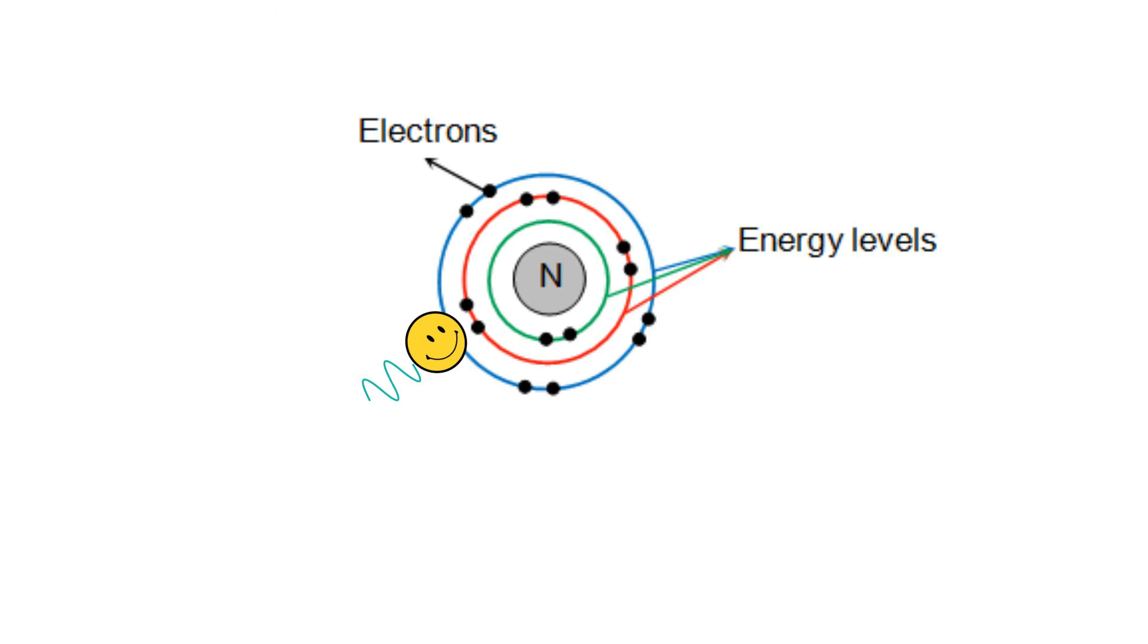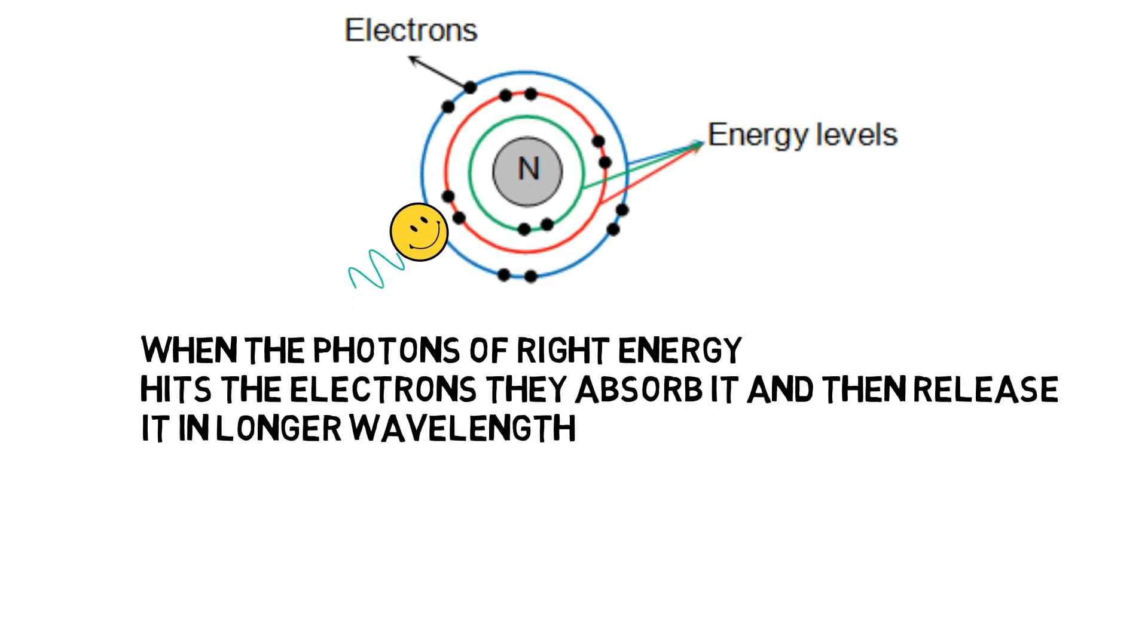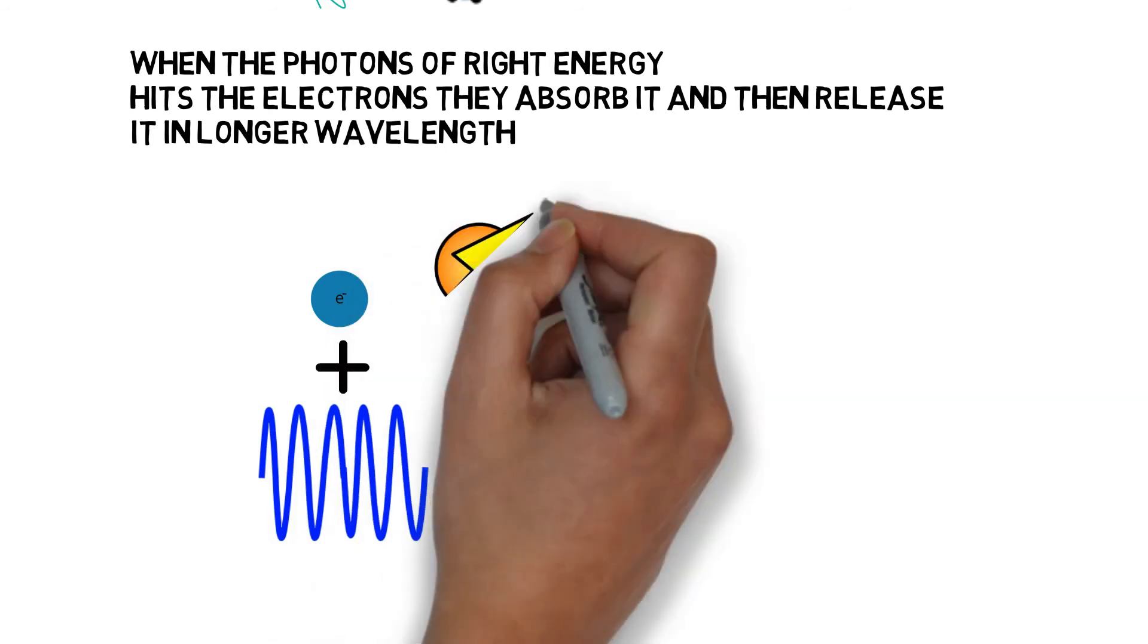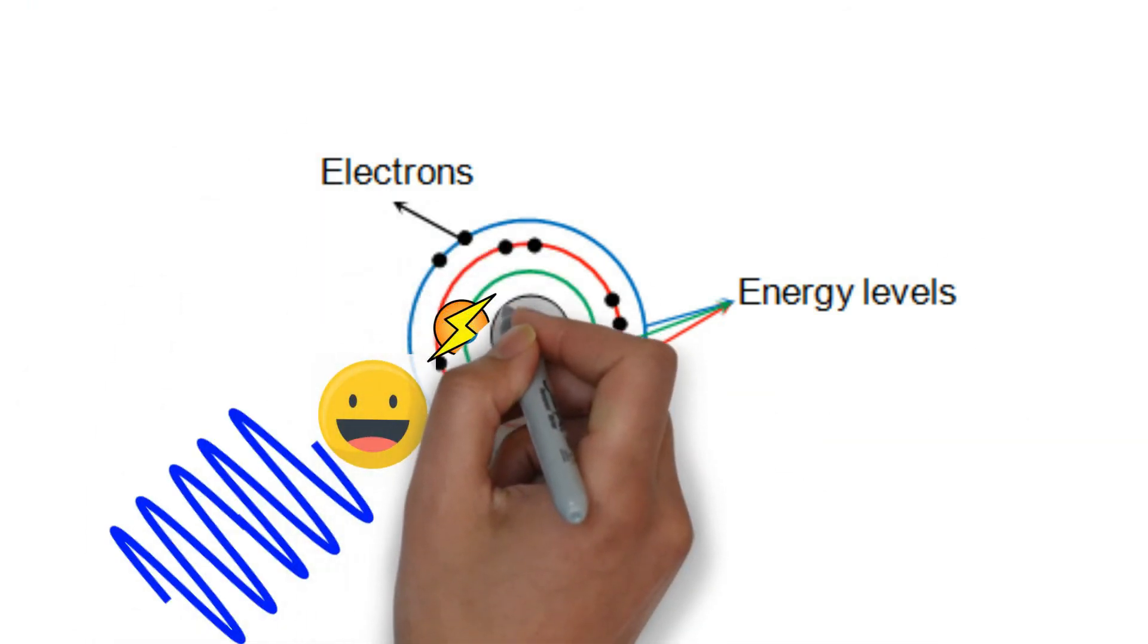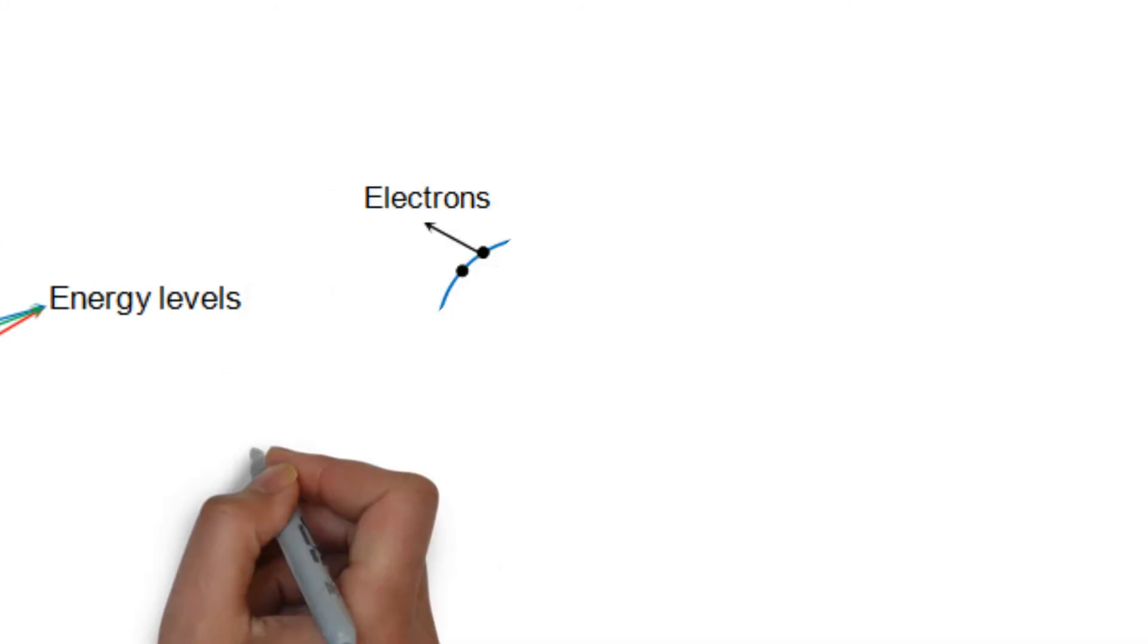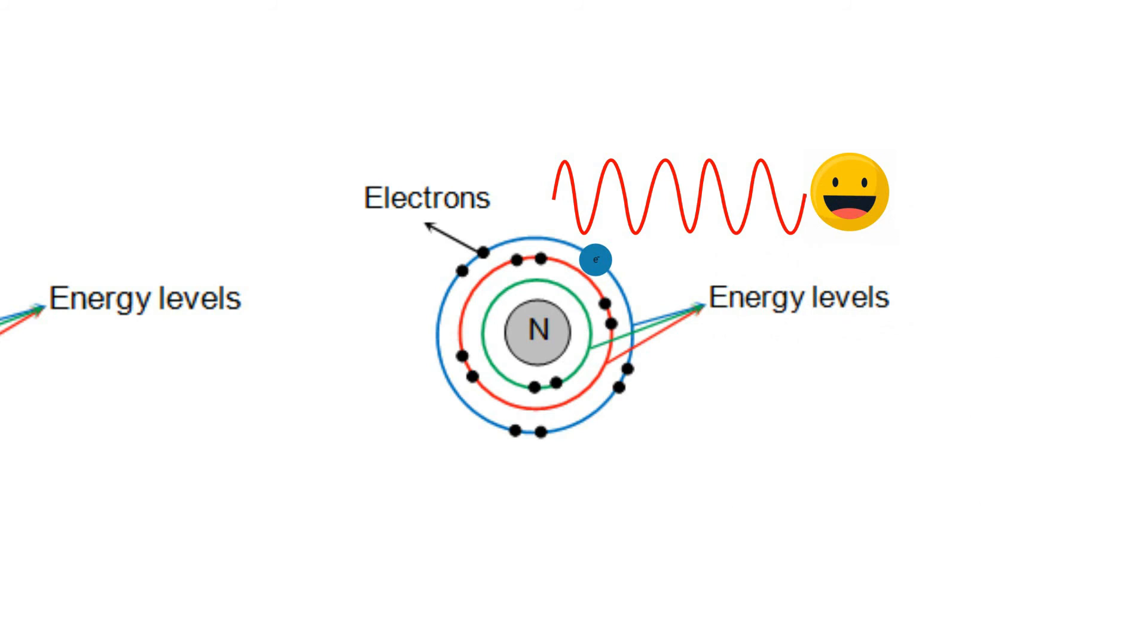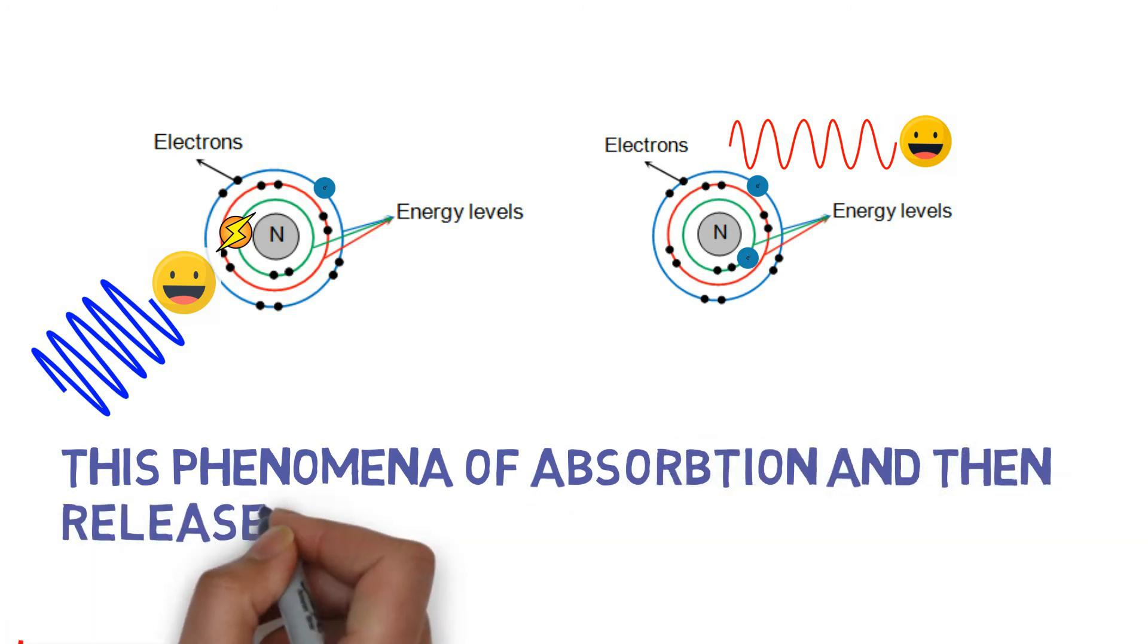So when the photons of right energy hit the electrons, the electrons get excited and jump to a higher energy shell. But when it returns back to its relaxed state after some time, it releases energy in a longer wavelength, or we can say that red light is emitted in the process.